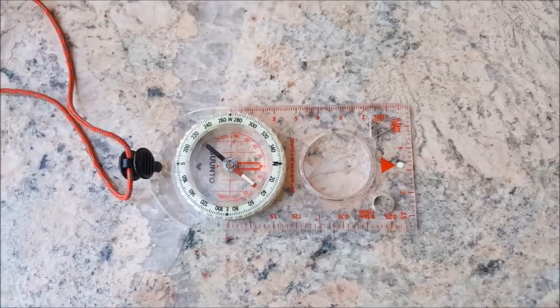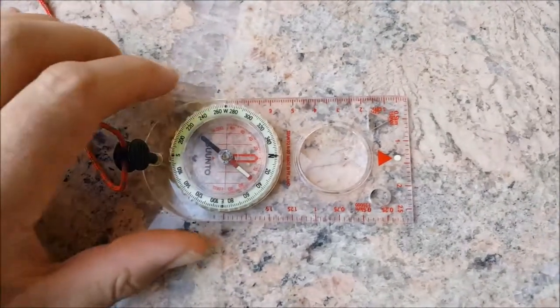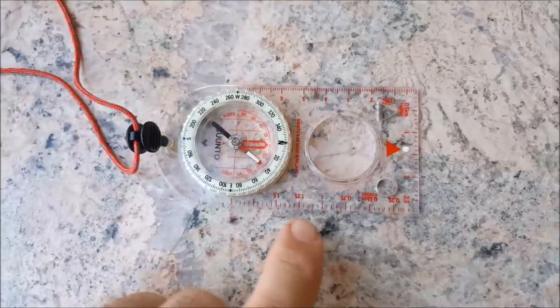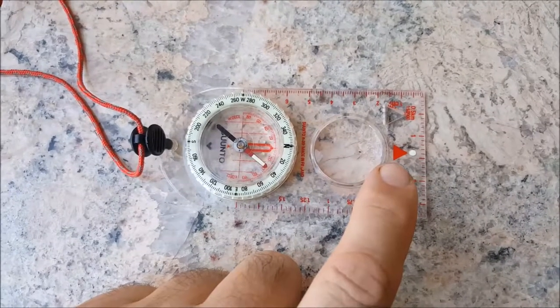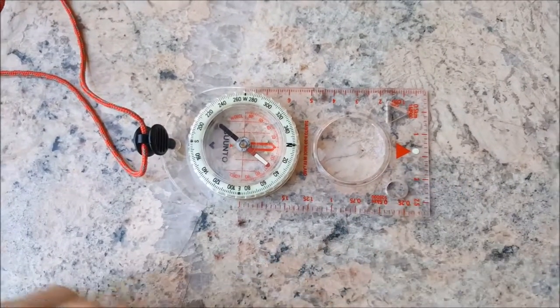If you look at this compass here, it's a baseplate compass and you can see the baseplate over there. You can see the direction of travel arrow, which is a triangle there pointing in the direction of travel.